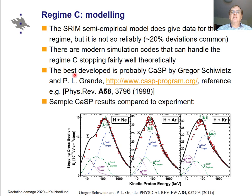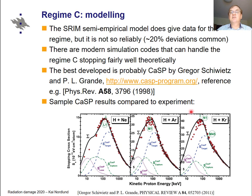There are newer codes that can handle this regime theoretically. Probably the best is the CASP code by Gregor Schiwietz and Pedro Grande, which performs advanced quantum mechanical calculations of the stopping power. These calculations include different electron capture and electron loss processes, and the sum of these different processes gives the total stopping power — and it compares well with experiments without being fit to them.